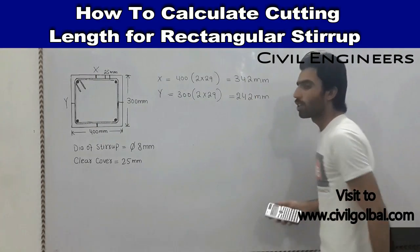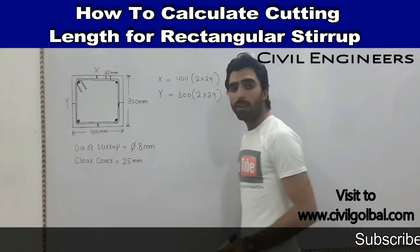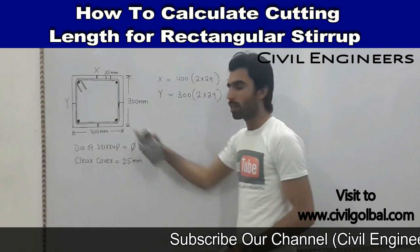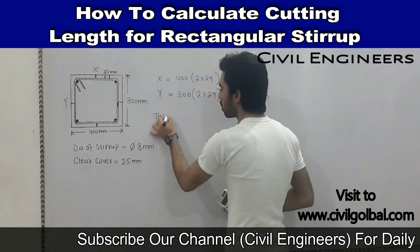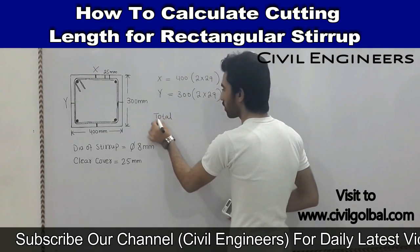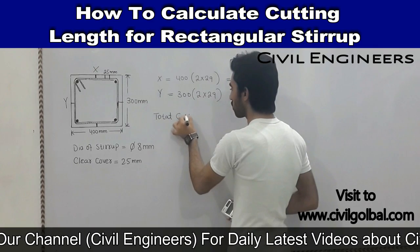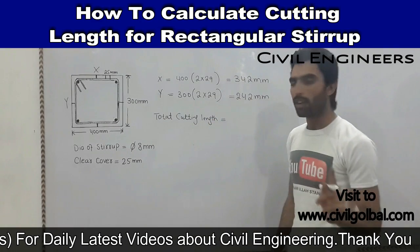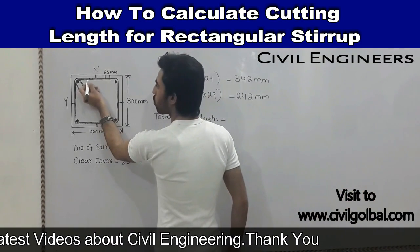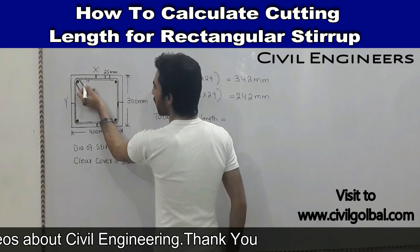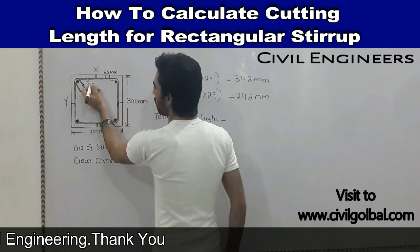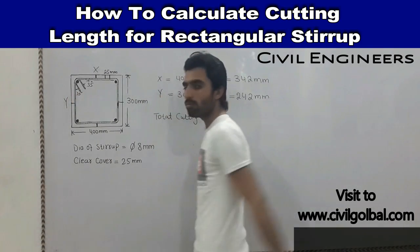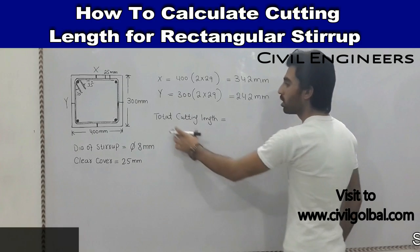Both values are in millimeters, not meters. Now I will find out the total cutting length for the stirrup. One important thing: between the two hooks, the angle must be 135 degrees. Keep that in mind — both sides are 135 degrees.